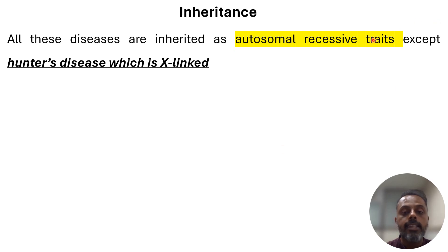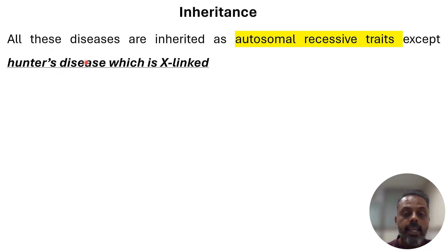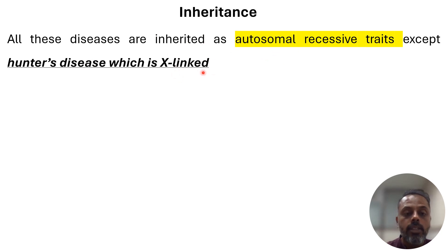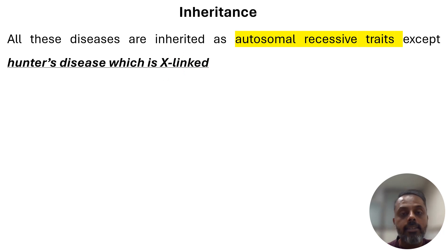Regarding inheritance, almost all mucopolysaccharidoses are inherited by autosomal recessive trait. Remember: all mucopolysaccharidoses are inherited as autosomal recessive except Hunter's disease, which is inherited as X-linked recessive. This exception is commonly asked in multiple choice questions.